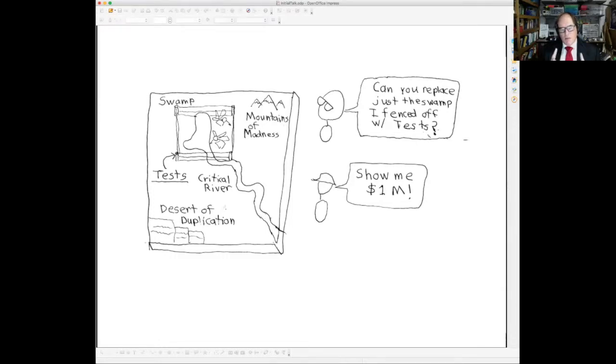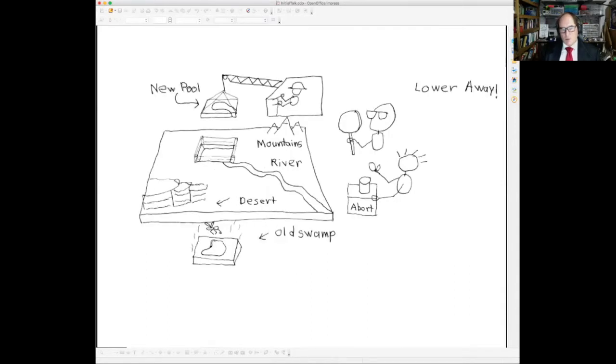And then he was able to convince Terry to be courageous and say, let's go ask government contractors. And that's this little guy with the hard hat here. How much will it cost to rewrite just the swamp, which is protected by the fences? And the government contractor said, if you've got a million dollars, we'll try to rewrite it. And that's a lot better than a hundred million dollars.